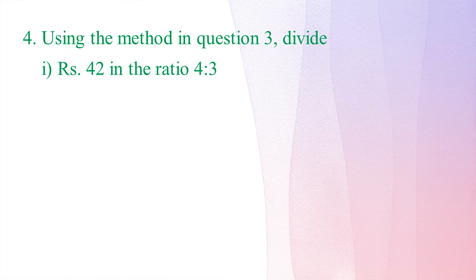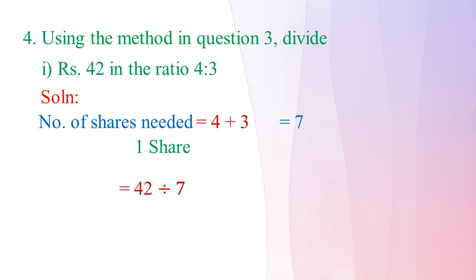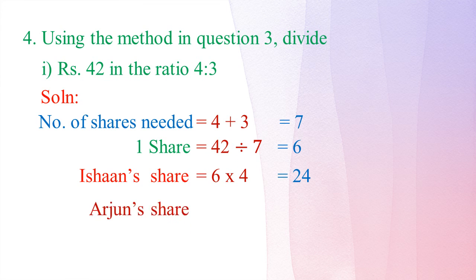Using the same method, divide Rs. 42 in the ratio 4 is to 3. Number of shares needed equals 4 plus 3 equals 7. One share equals 42 divided by 7 equals Rs. 6. The first person's share equals 4 multiplied by 6 equals Rs. 24. The second person's share equals 3 multiplied by 6 equals Rs. 18.